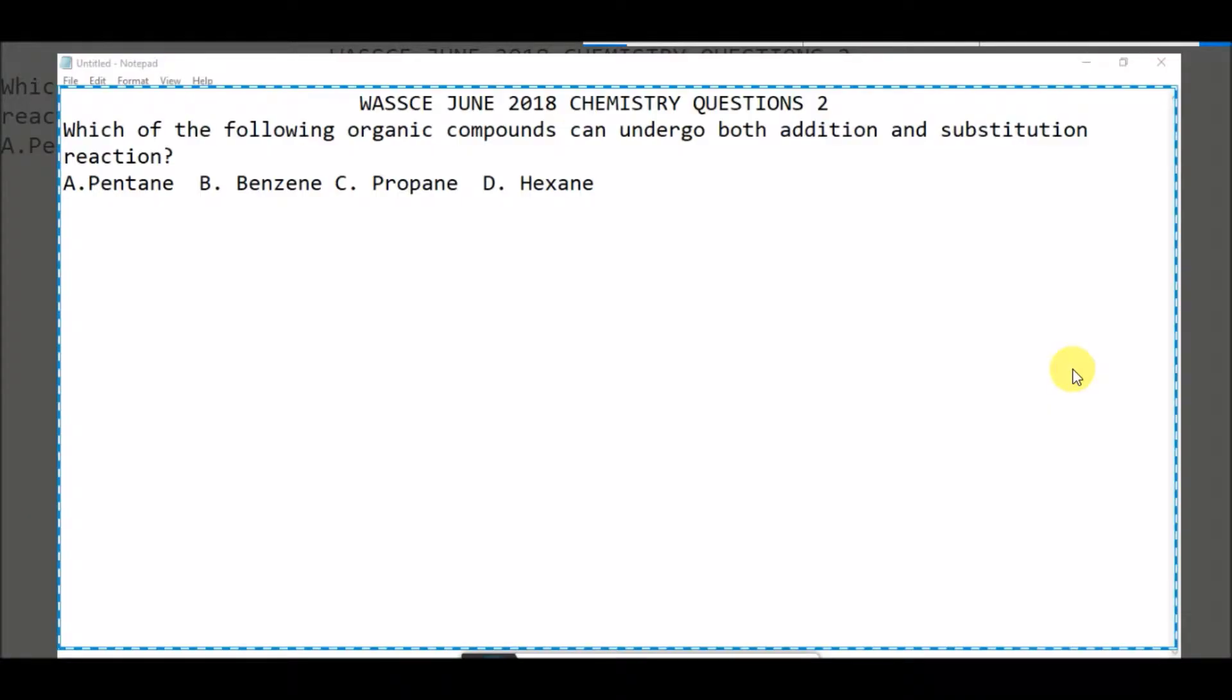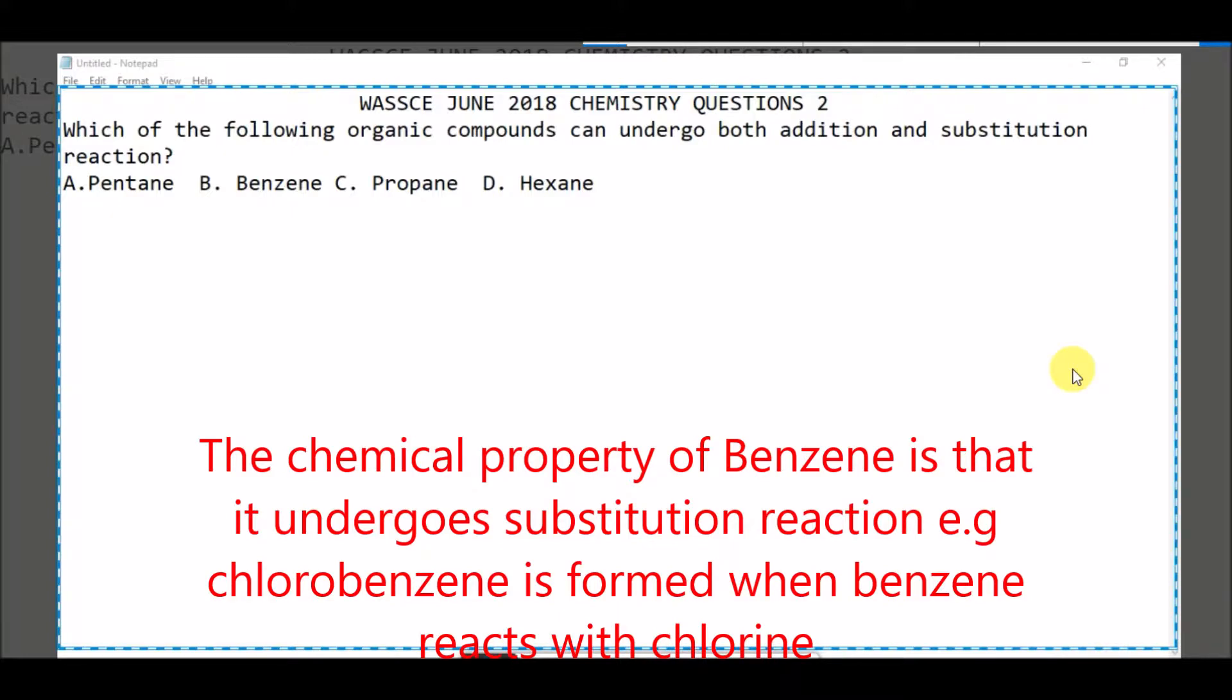Hello, let's look at question number two: Which of the following organic compounds can undergo both addition and substitution reaction? Option A: pentane, B: benzene, C: propane, D: hexane. The answer is B, benzene.